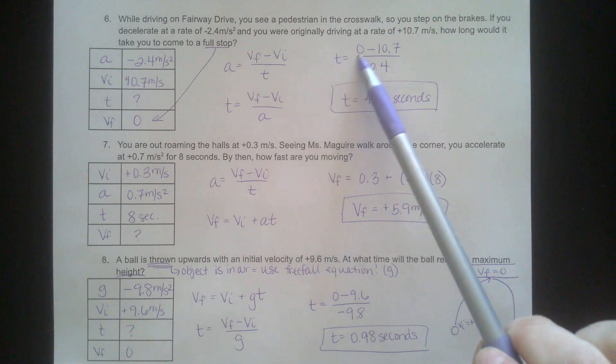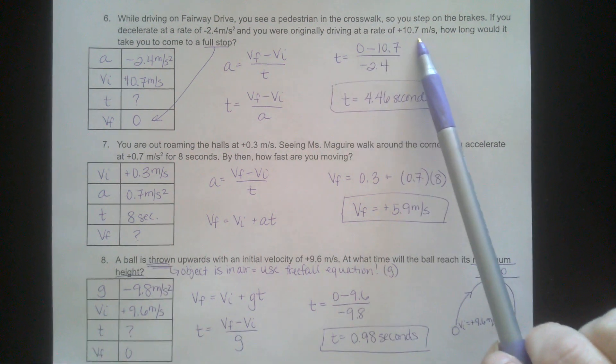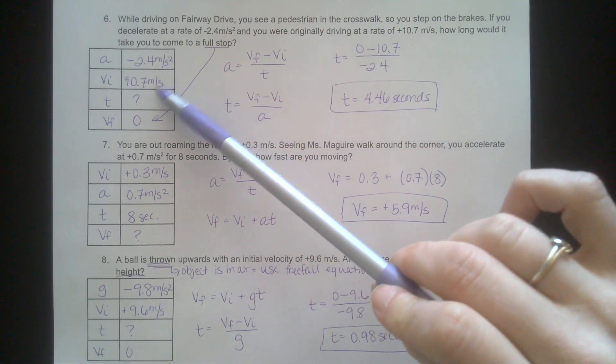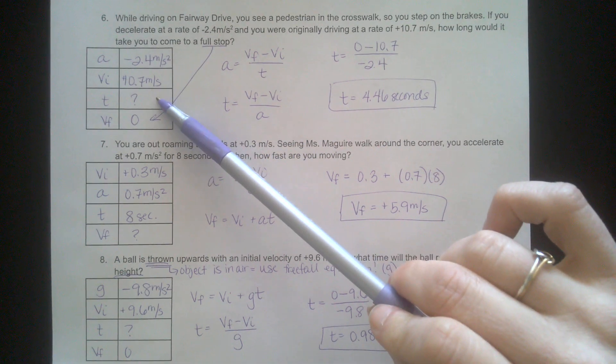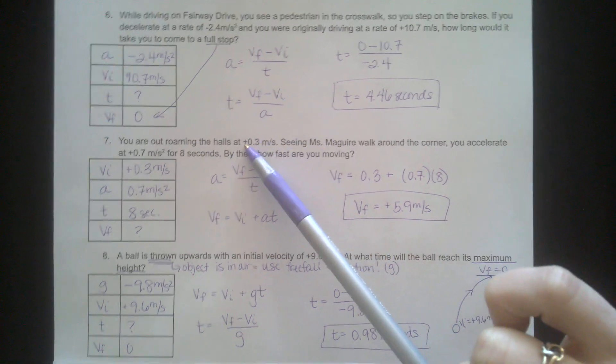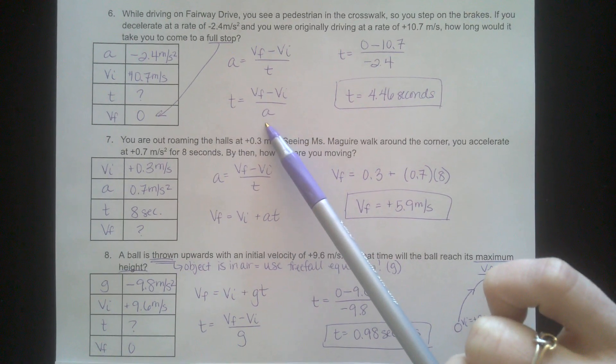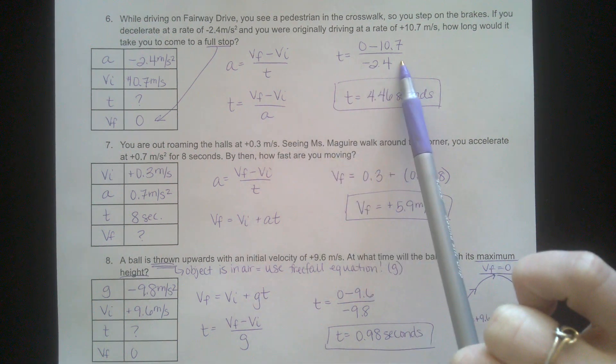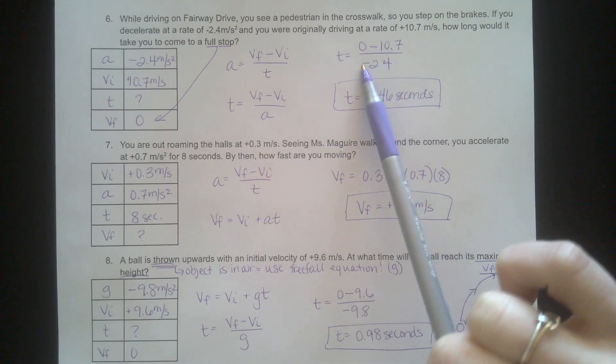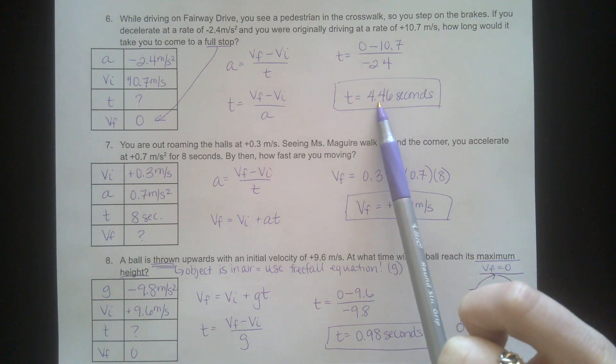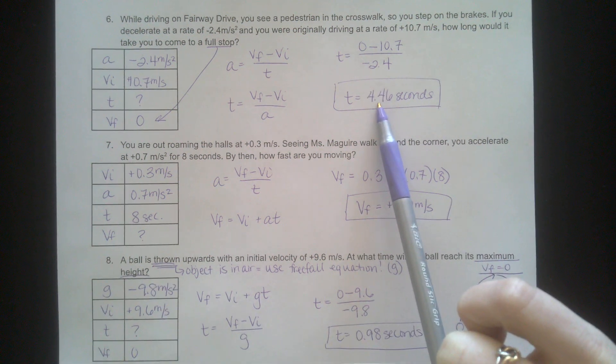Originally, you're driving at 10.7 meters per second, so that's your VI. You're looking for time. Here's the equation rearranged to solve for time. We plug in our values. You have two negative signs that are going to cancel out when you divide. So you get about 4.46 seconds.